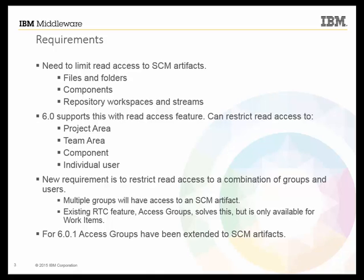The basic requirement is a need to limit read access to SCM artifacts. SCM artifacts can be files, folders, components, repository workspaces, or streams. RTC 6.0 already supports this with the read access feature — access can be restricted to a project area, a team area, a component, or an individual user. The new requirement is that it should be possible to restrict read access to a combination of groups and users, so that multiple groups of users will have access to an SCM artifact. RTC 6.0 has an Access Groups feature that solves this, but it is limited to work items. Therefore, for release 6.0.1, the Access Groups feature has been extended to SCM artifacts.